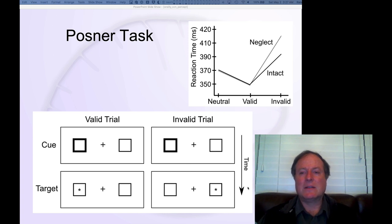And you get a sort of proportional also additional amount of slowing in that case, about 20 milliseconds in addition relative to this neutral case. So you get both a speed up for valid trials and a slow down for invalidly cued trials.